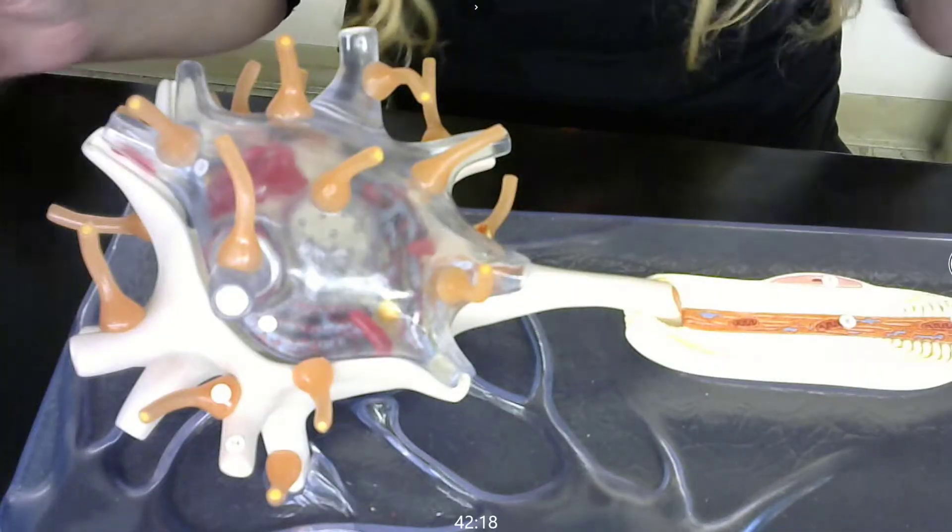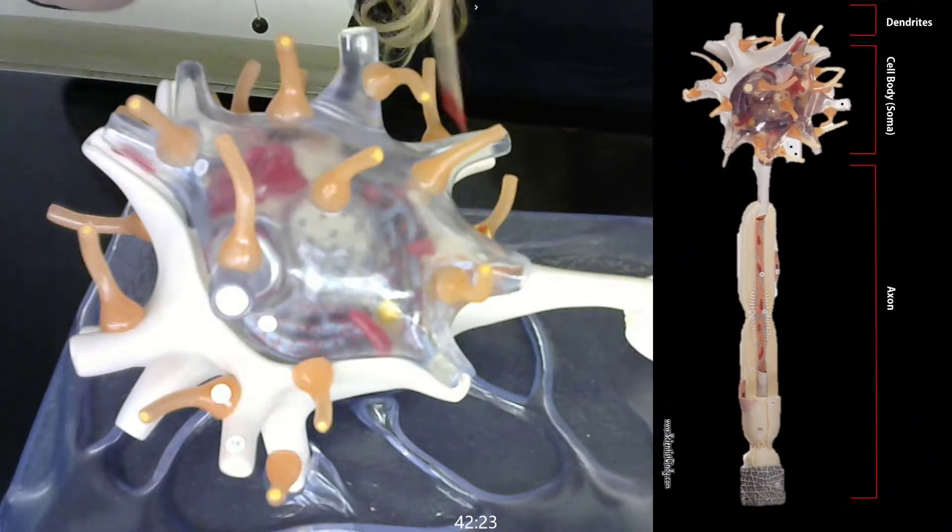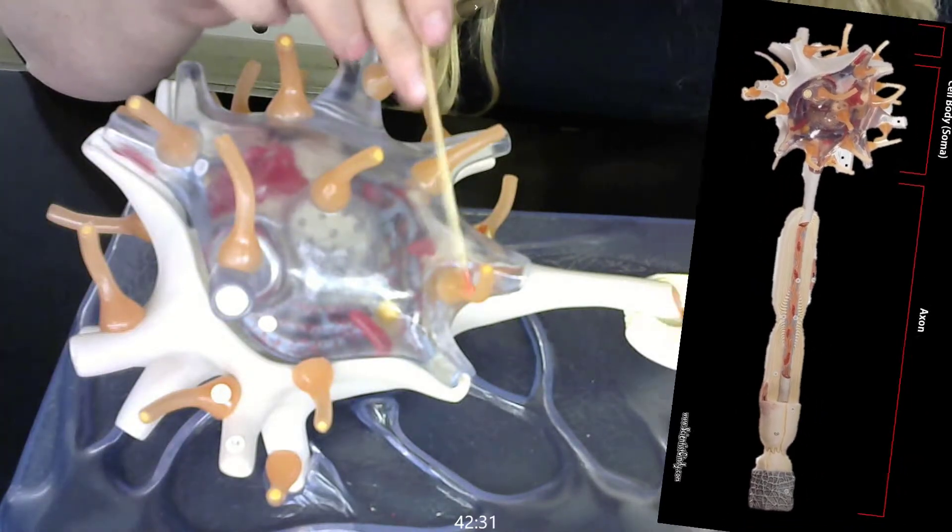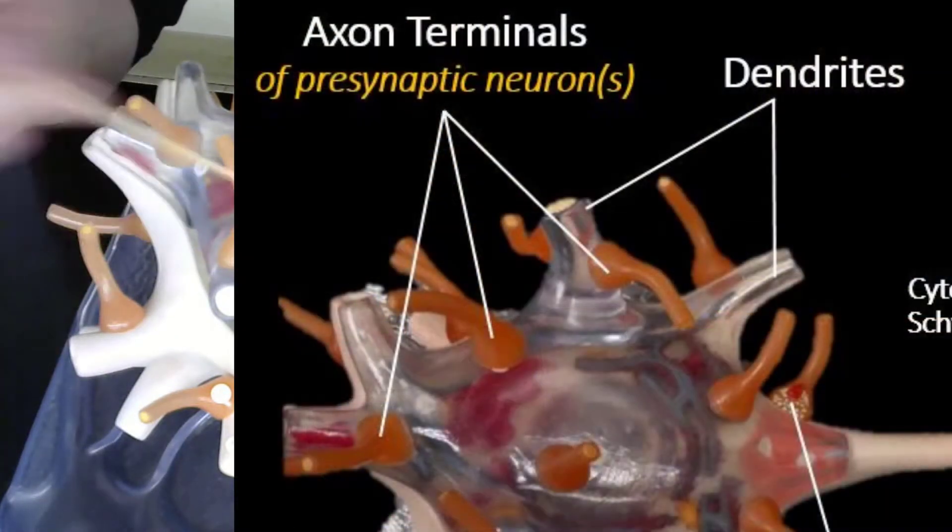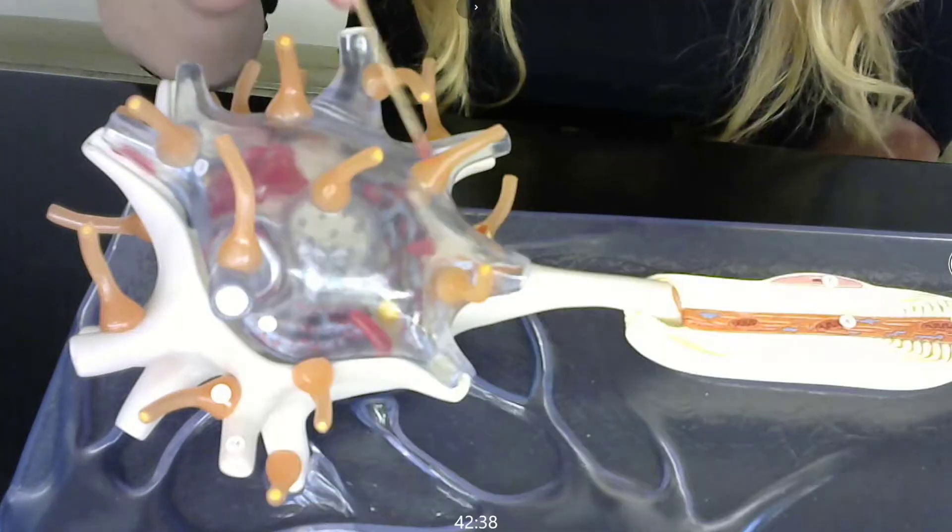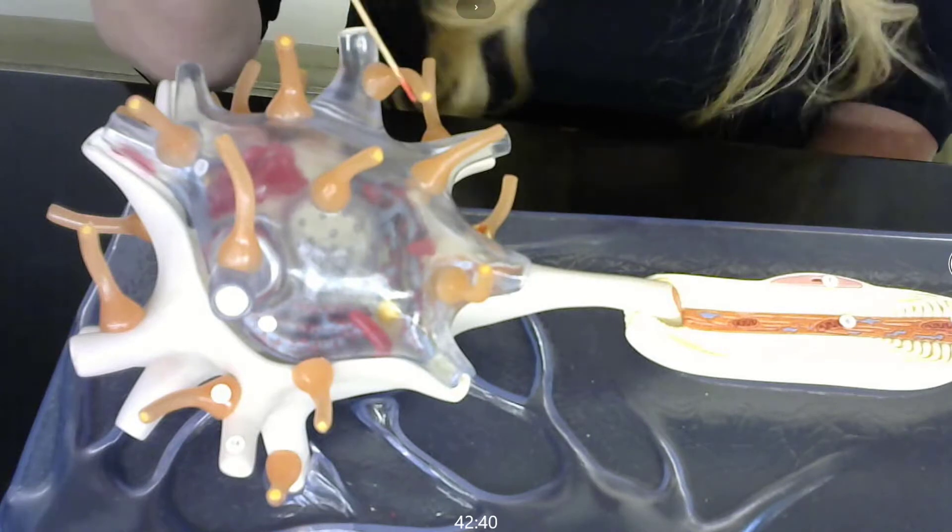All right, so here is our neuron model. The whole entire region is the cell body. These pinkish or beige-ish things here, these are axon terminals. Axon terminals from the presynaptic neuron that is coming in and synapsing with our neuron model.